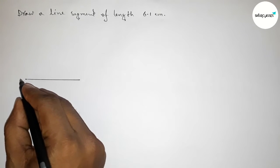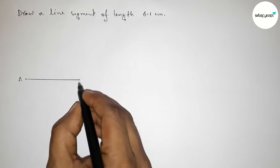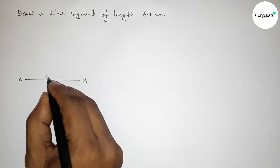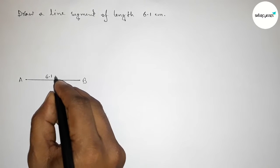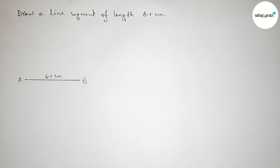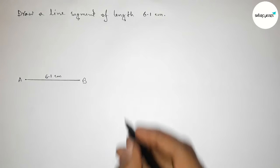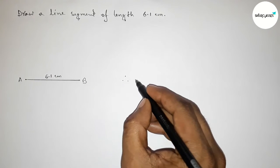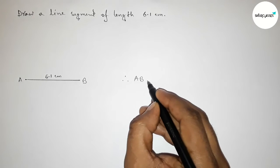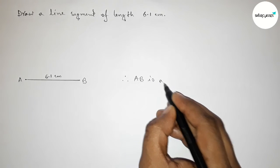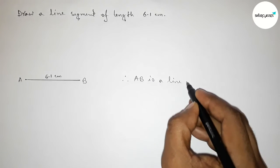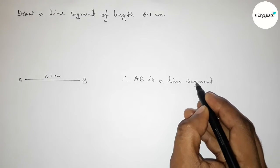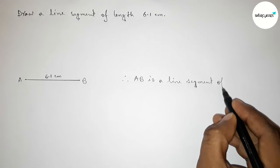So taking here point A and here B. So AB is a line segment of length 6.1 centimeters. Therefore, we can say that AB is a line segment of length 6.1 centimeters.